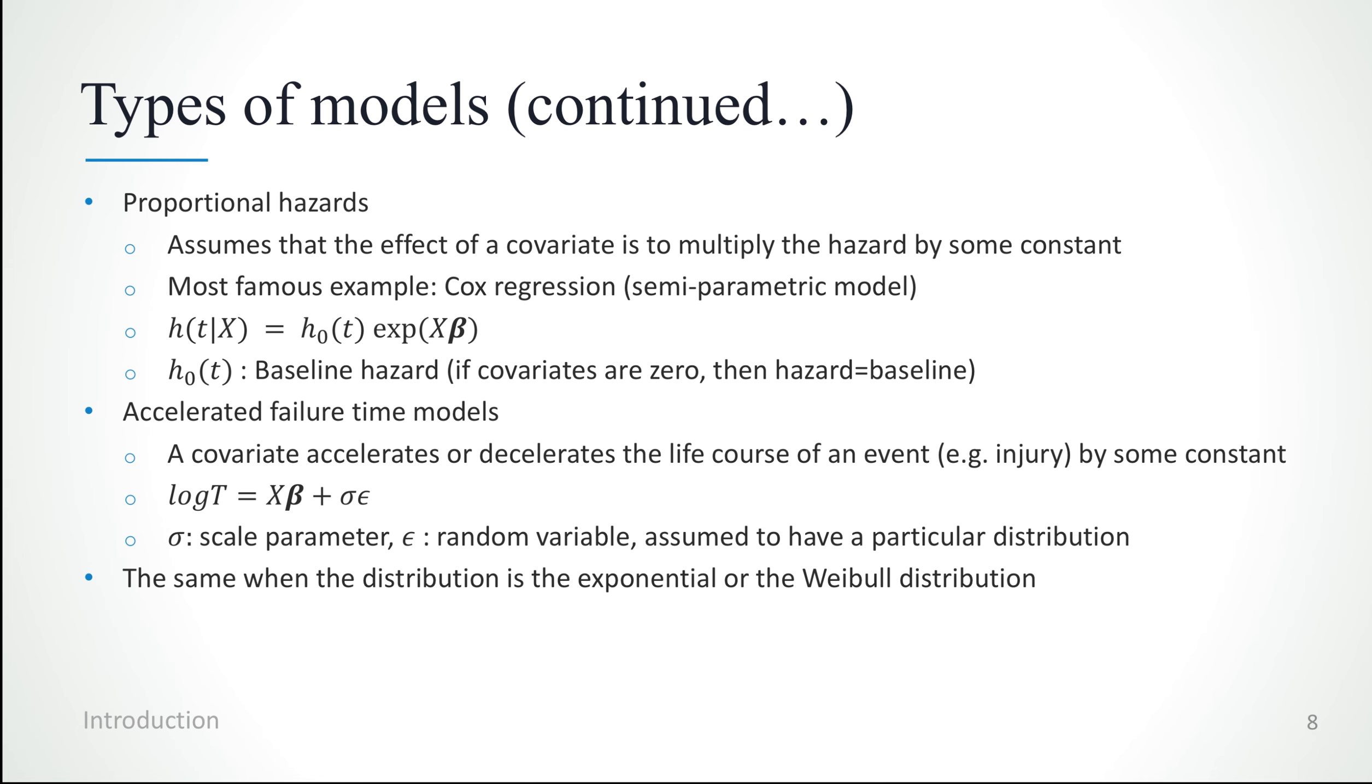Another categorization of models is on whether they are proportional hazard models or accelerated failure time models. Proportional hazard models assume that the effect of a covariate is to multiply the hazard by some constant. The most famous example is Cox's proportional hazard model, which is a semi-parametric regression model.